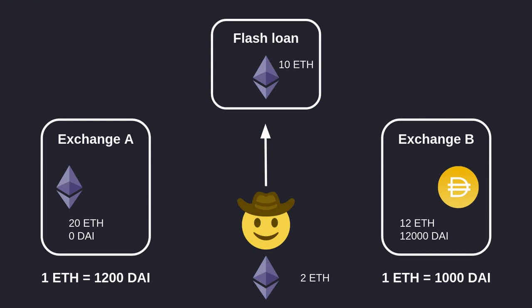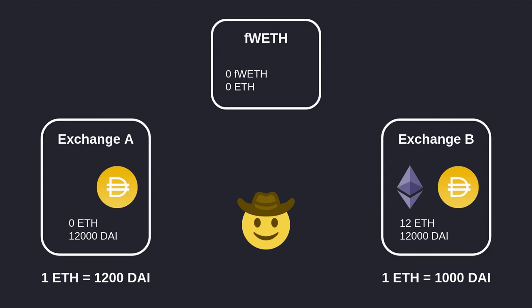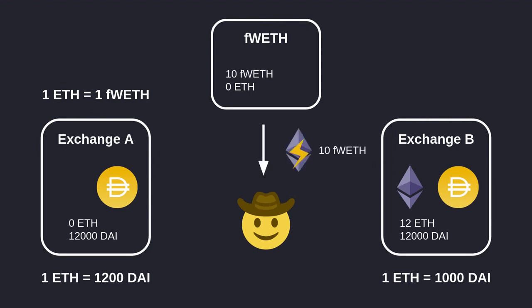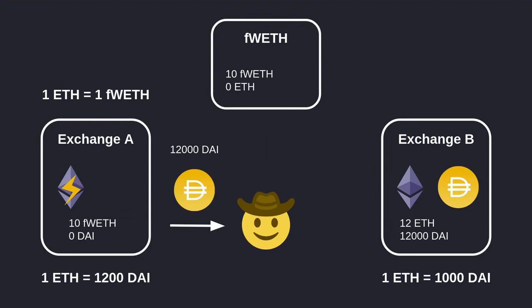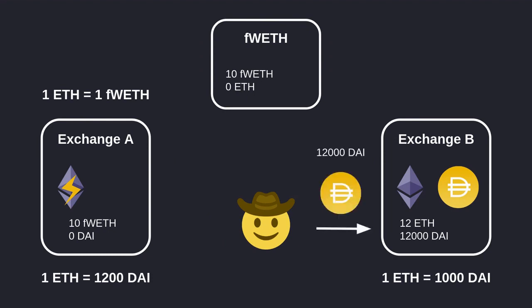Let's now replace the flash loan with flash mint and see how arbitrage works. Here is the setup: instead of a flash loan contract we have a flash mintable token. Notice there is 0 fWETH and 0 ETH inside this contract. On exchange A there is 0 ETH, however this exchange also accepts fWETH — one fWETH will be trading for one ETH. So first I will flash mint fWETH, send it over to exchange A, and get back DAI in return.